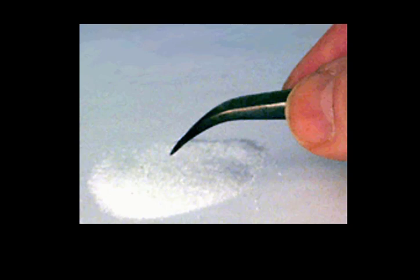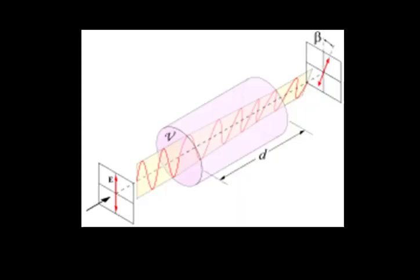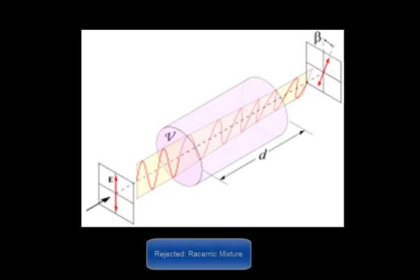However, when the sorted crystals were dissolved, one form rotated polarized light to the right, the other rotated polarized light to the left. Hence, any chemical that is a mixture of its right and left-handed forms is now called a racemic mixture even if it's not made of tartaric acid.